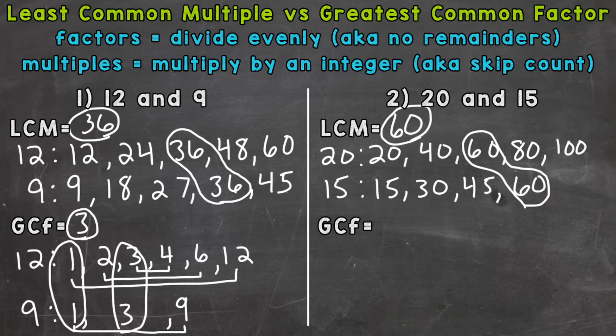Greatest common factor. We will write out our factor lists for 20 and 15. So we'll start with 20 here and 1 and 20. We know that 2 can go into 20 because 20 is even. And 2's factor pair here or partner is 10.